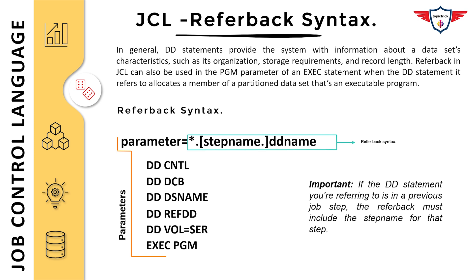Remember, there are certain statements that cannot be referenced with the JCL referback statement. These include: DD star statements in a DCB, DSN, or volume parameter; DD dummy statements in a volume or unit parameter; nested JCL procedure statements; and SYSOUT DD statements. These are examples of statements that cannot be referenced in your JCL referback statement.